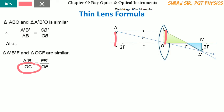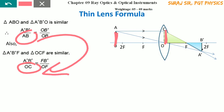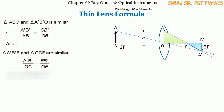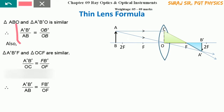The segment length OC, highlighted in the diagram, is exactly equal to AB. So we can replace OC with AB and rewrite the expression as A'B' / AB = FB' / OF. This step is very similar to the mirror formula derivation.